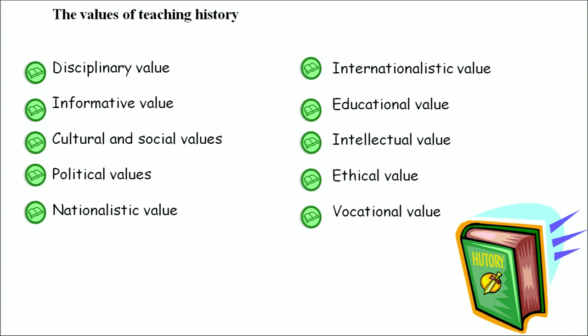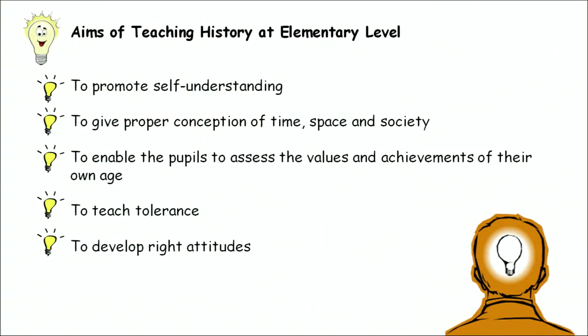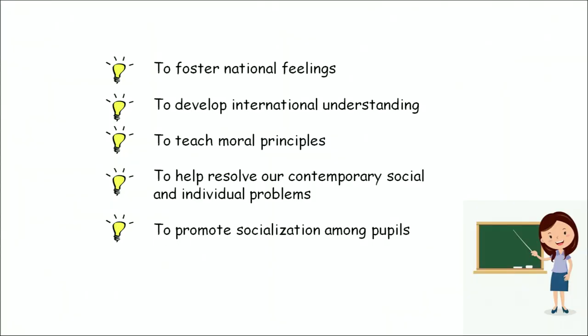When we discuss the aims of teaching history at elementary level, history is to promote self-understanding, give proper conception of time, space, and society, and enable pupils to access the values and achievements of their own age. It is to teach tolerance and develop the right attitude among children, to foster national feelings, to develop international understanding, to teach moral principles, and to help resolve contemporary social and individual problems, as well as to promote socialization among people.